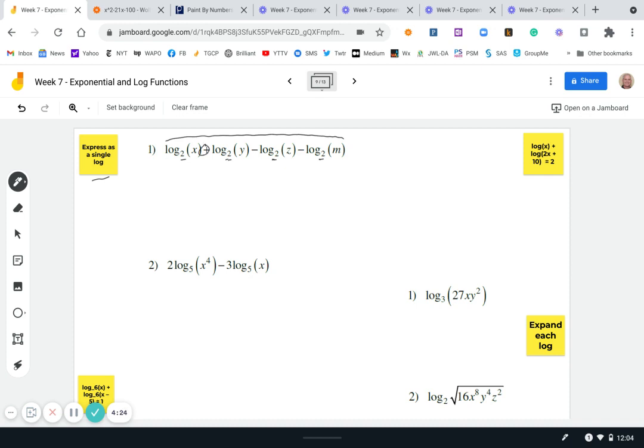So remember that plus means that they were multiplied. So we can say log base two of x times y, right? And then this part is minus, so we'll leave that minus there for now. Now log base two of z divided by m because there's subtraction in there.